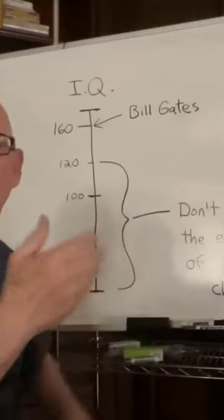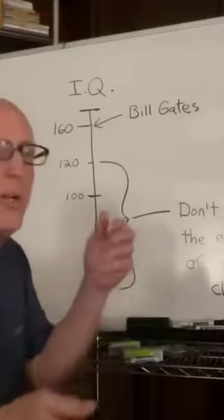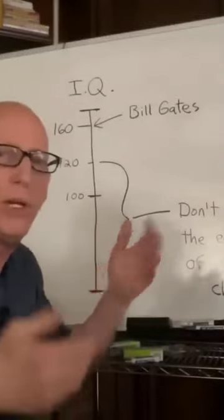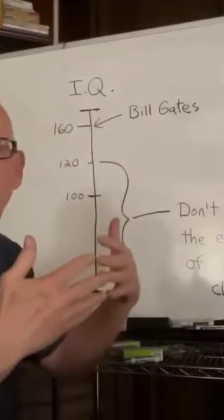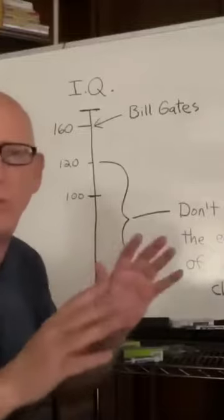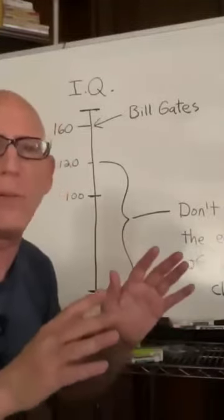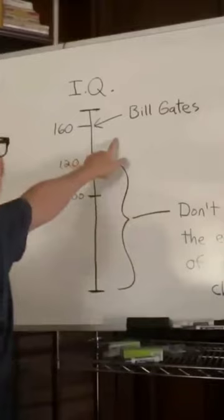You might understand economics alone without the population. You might understand population, but you don't understand that a growing population is absolutely required for economic stability. Everybody at Bill Gates' IQ level knows that.